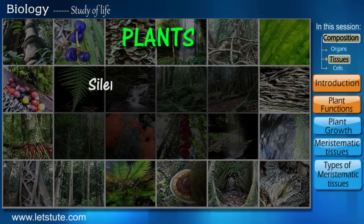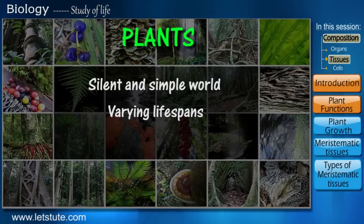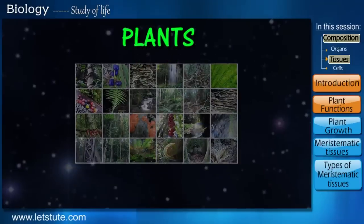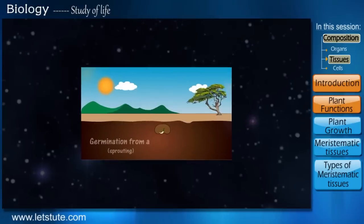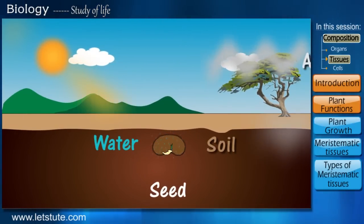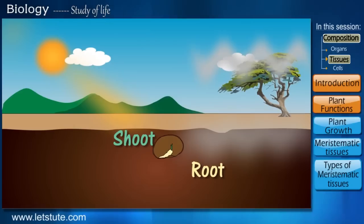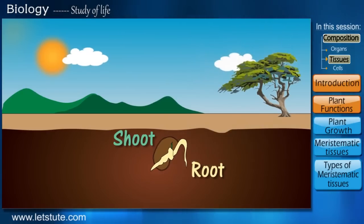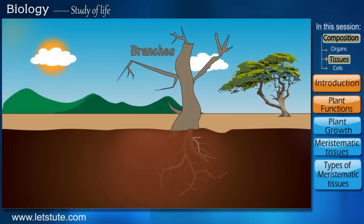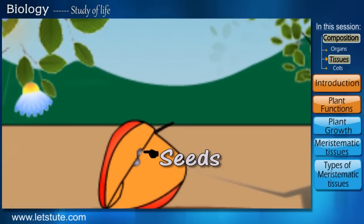And since we humans as well as other animals all depend on plants, wouldn't we like to get to know these plants a little better? Plants belong to a silent and simple world with varying lifespans, during which all plants carry out similar functions necessary for their daily living. The very first of them being germination from a seed. This seed, when supplied with water, soil, air and sunlight, begins to grow by giving off a root and a shoot, both of which continue to increase in length. The shoot later forms the stem and starts giving off branches that bear leaves, flowers and fruits, which contain seeds for the next generation.